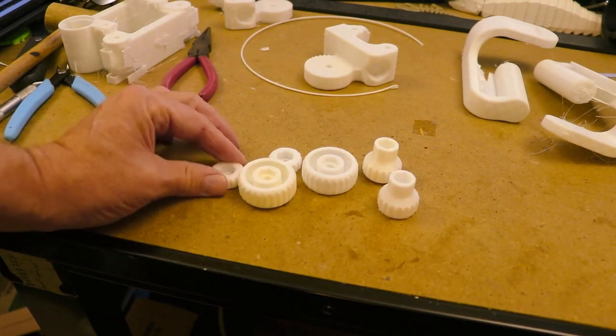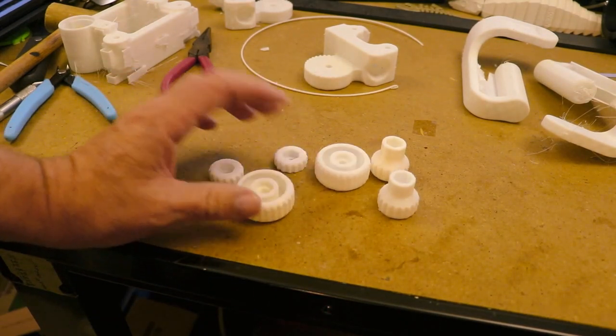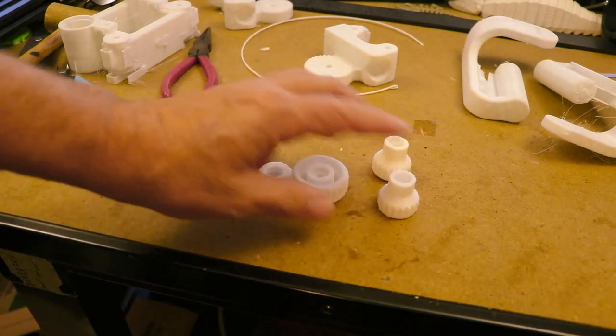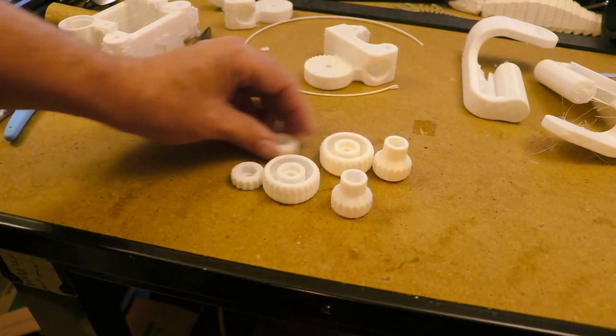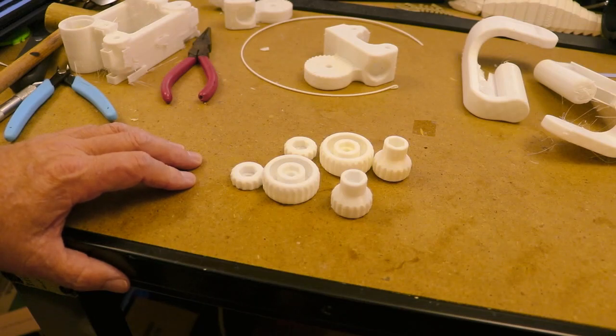Because this has to hold down springs and tension, and I think that the one millimeter is going to do much better than adding like three or four perimeters to a 0.4 millimeter nozzle.